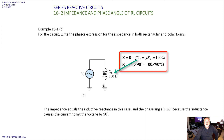For a purely inductive circuit, Z equals zero plus JXL. XL is given as 100 ohms already, not in henries. So Z, the phasor quantity, is XL at 90 degrees — 100 at an angle of 90 degrees ohms. Notice the whole quantity precedes the ohm unit: it's written as 100 at an angle of 90 degrees, ohms.